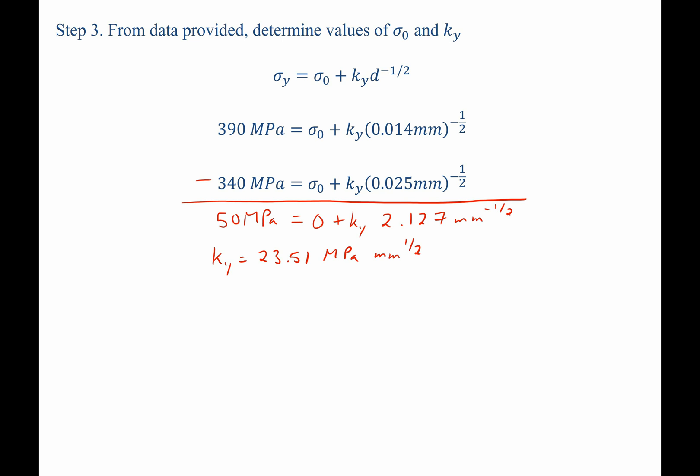Now that we have k-sub-y, we can plug it into either of the two equations above to solve for sigma-naught. We find that sigma-naught should equal 340 megapascals minus 23.51 megapascals root millimeters multiplied by 6.324 millimeters to the negative one-half power. When we plug all these numbers in, sigma-naught equals 191 megapascals.